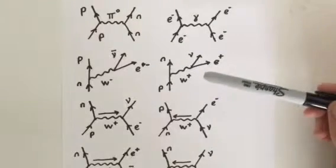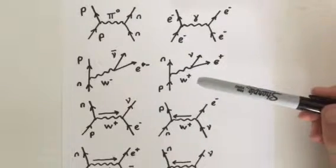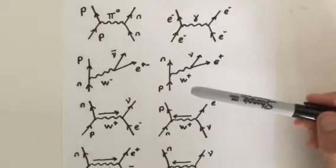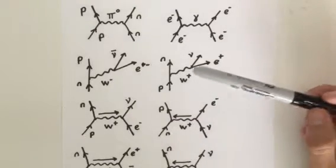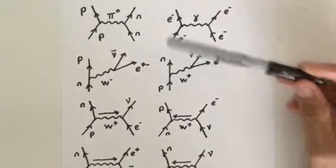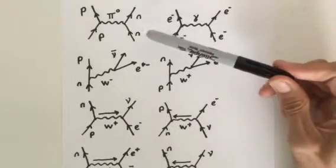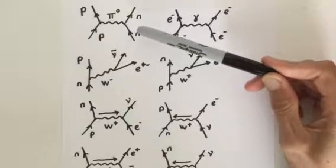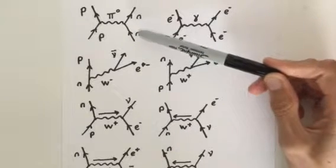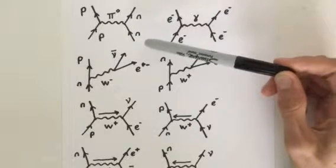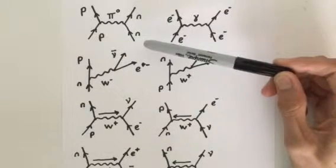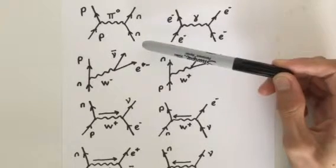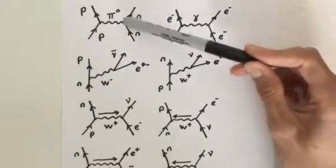Here I've got eight important Feynman diagrams for you to learn. Let's start with the first one. Diagram 1 represents the strong interaction. A proton and a neutron are attracted together by the exchange of a neutral pion, pi nought.